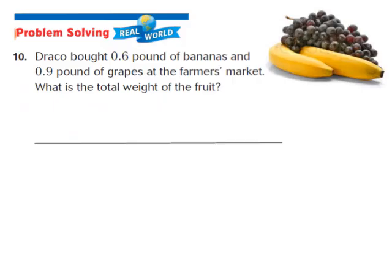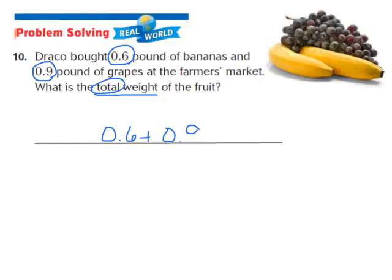Now let's take a look at question number 10 — one of our real-world problem-solving questions. Number 10 says: Draco bought 6 tenths pounds of bananas and 9 tenths pounds of grapes at the farmer's market. What is the total weight of the fruit? I know that the word 'total' means I need to add, so my problem becomes 6 tenths plus 9 tenths. I'll draw a quick picture to model that decimal addition.